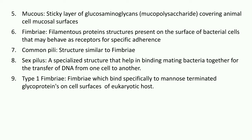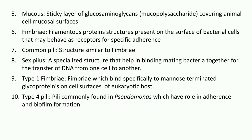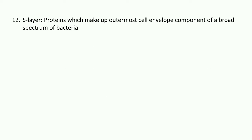Type 1 fimbriae bind specifically to mannose-terminated glycoproteins on the cell surface of eukaryotic hosts. Type 4 pili are commonly found in Pseudomonas and have a role in adherence as well as in biofilm formation. The S-layer consists of proteins that form the outermost cell envelope component of a large number of bacteria, enabling them to adhere to host cell membranes and environmental surfaces in order to colonize.